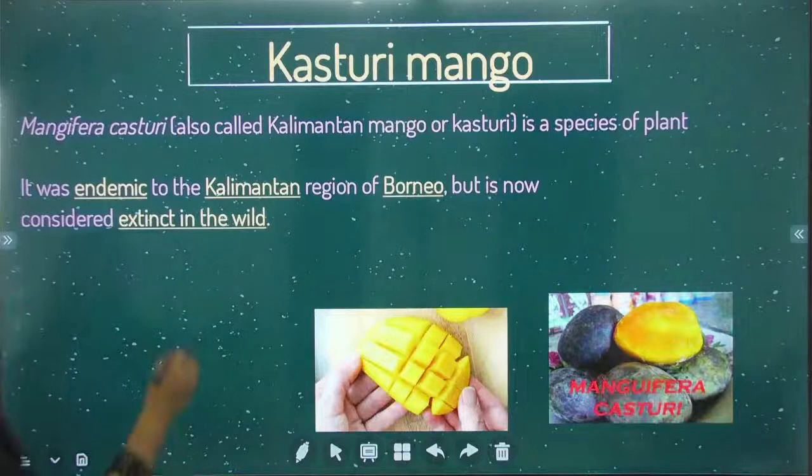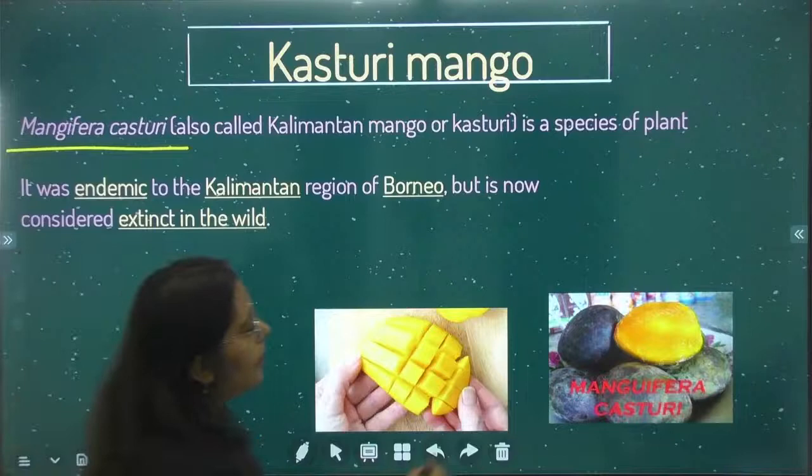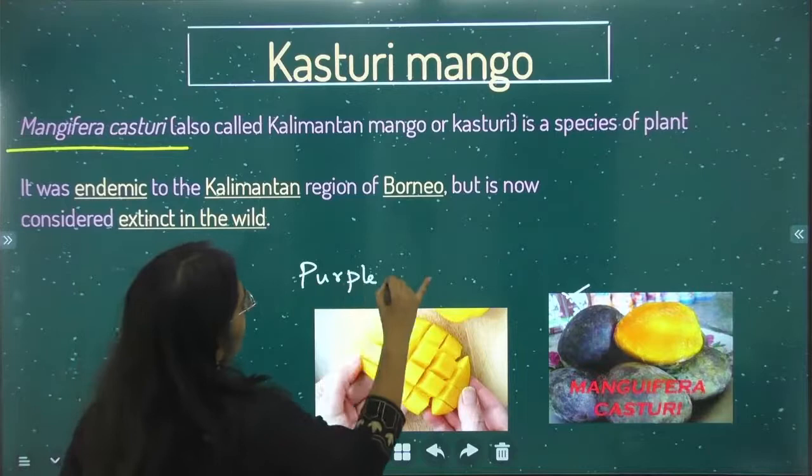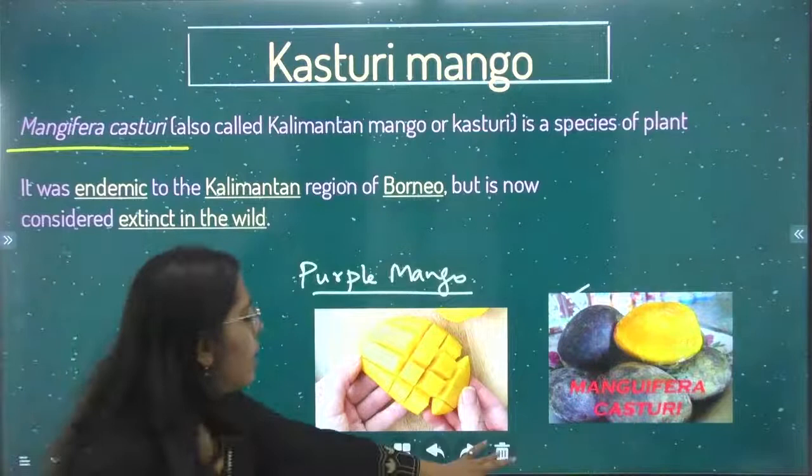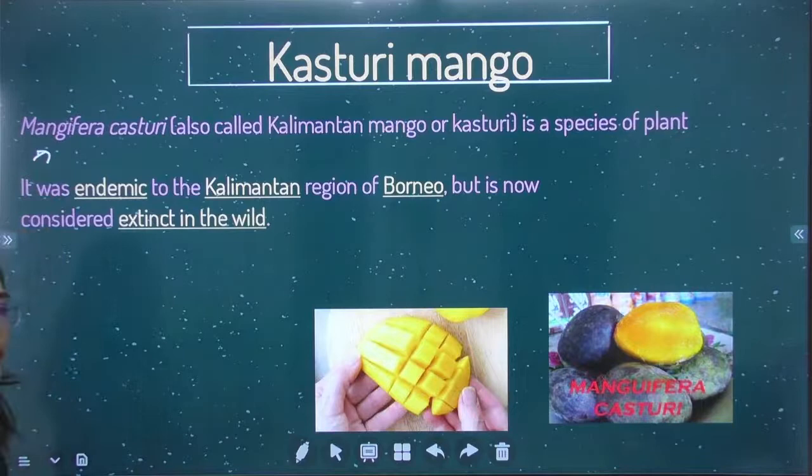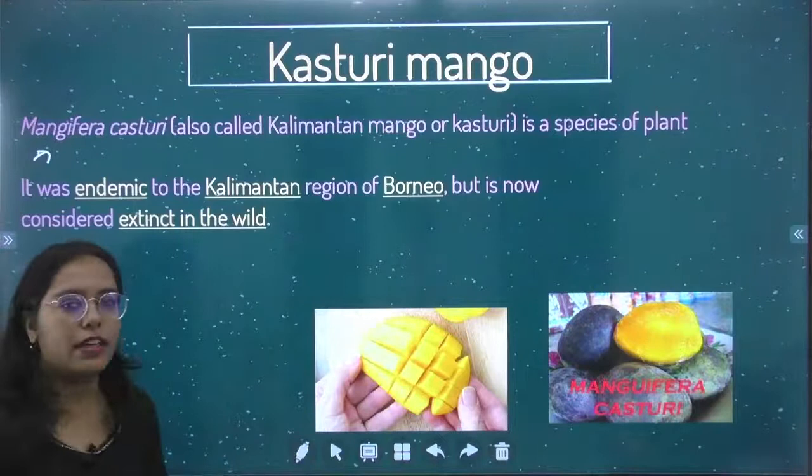Kasturi Mango — scientifically it is called Mangifera kasturi. This was previously found; it is also called the purple mango. It is an Indian variety. In India, the Kasturi Mango was found before but has now become completely extinct. This is what Mangifera kasturi looks like — that is its scientific name.